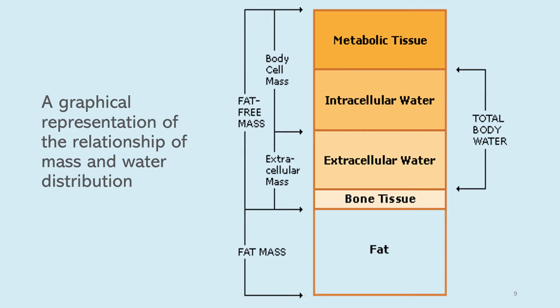This figure summarizes the relationship of mass and water distribution. There are two main components: fat-free mass and fat mass. Fat-free mass is further divided into body cell mass and extracellular mass. Metabolic tissue and intracellular water are components of body cell mass, while extracellular water and bone tissue are components of extracellular mass. Total body water includes both intracellular and extracellular water.